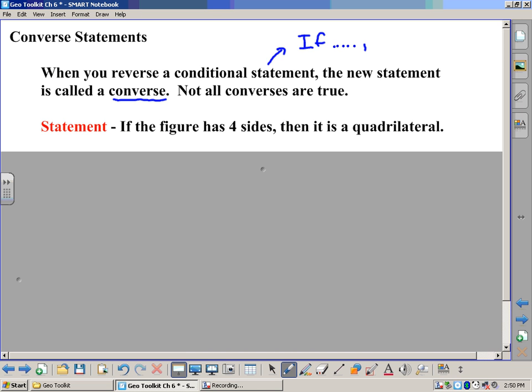So there's an example of a statement down here. It says, statement: if the figure has four sides, then it is a quadrilateral. Now that statement happens to be true. If the figure does have four sides, then it's definitely called a quadrilateral.